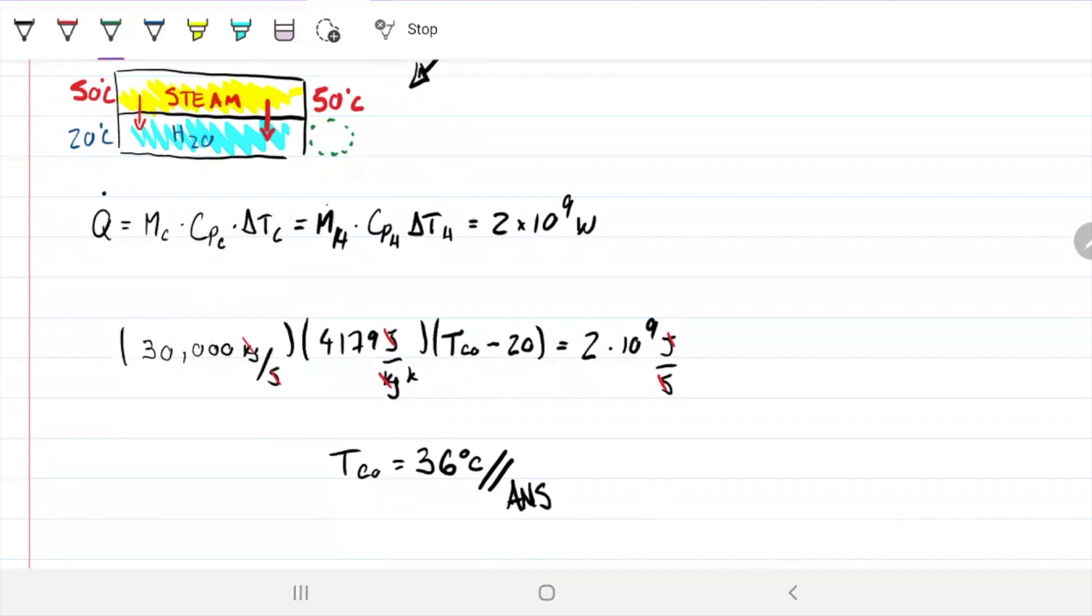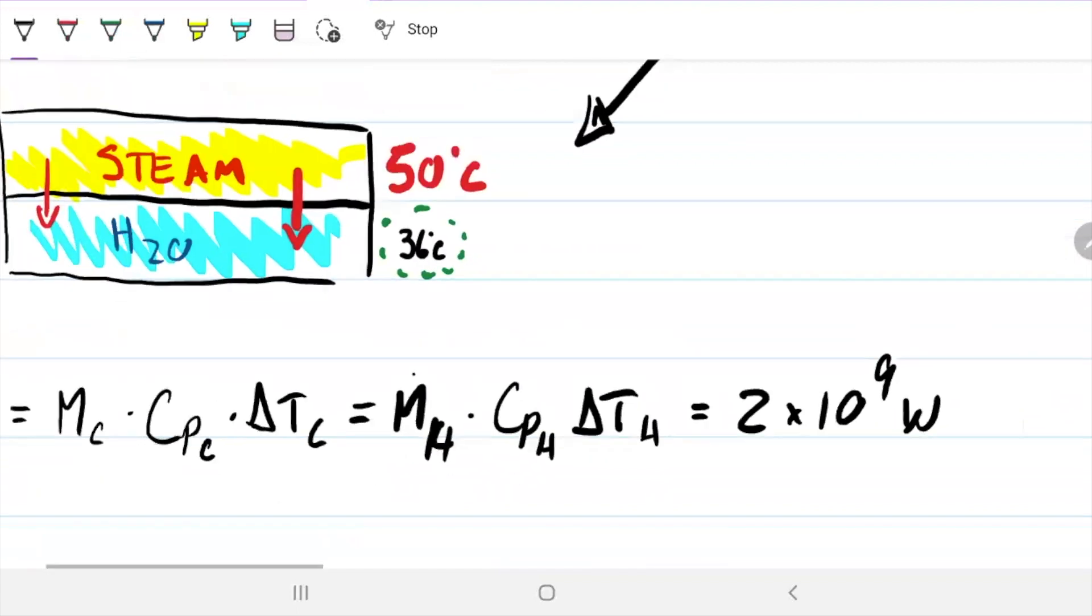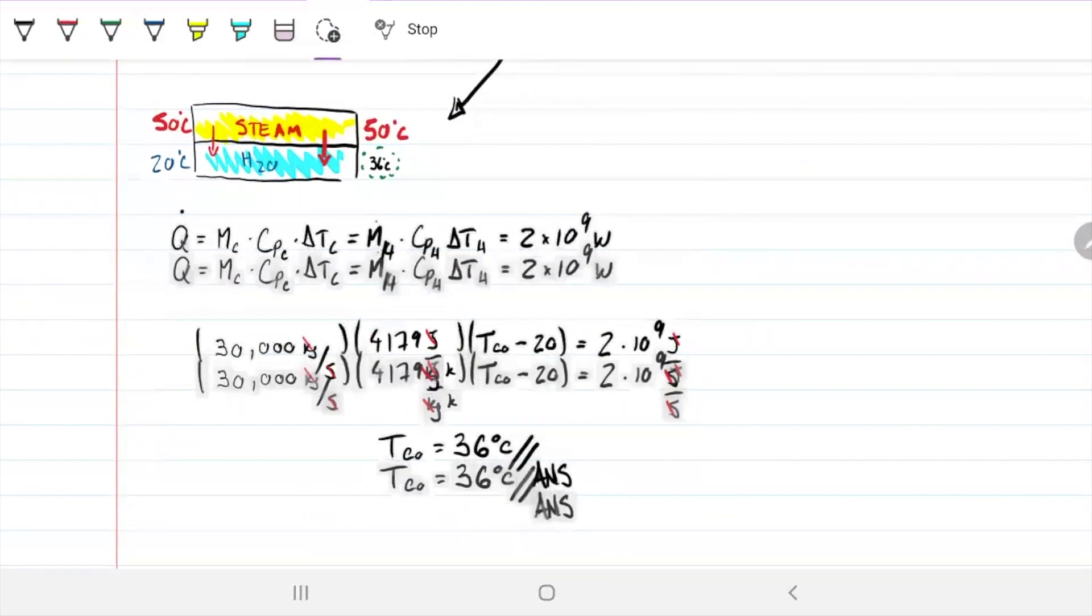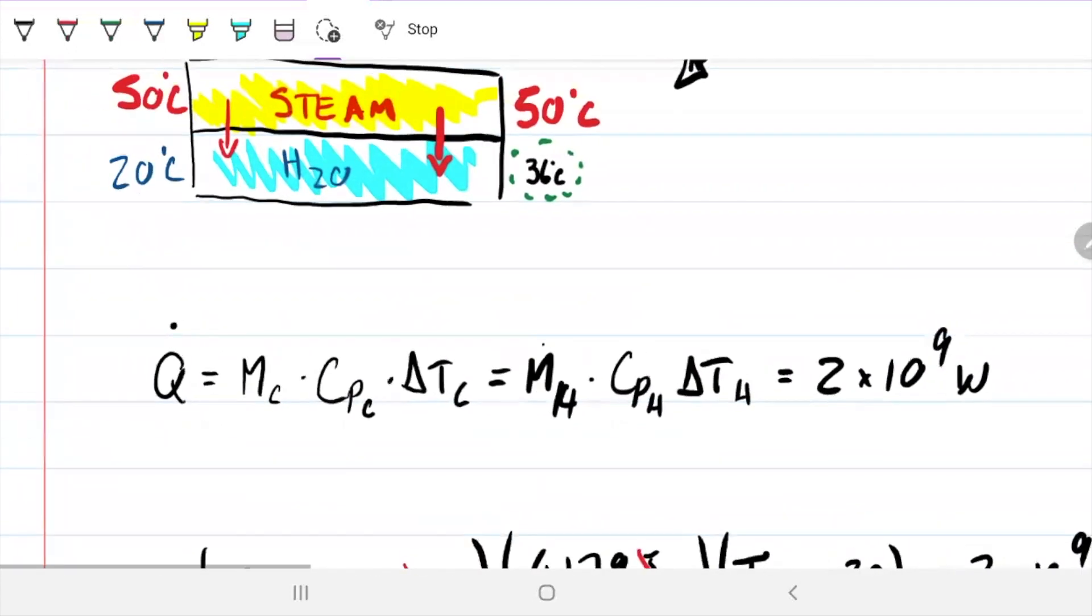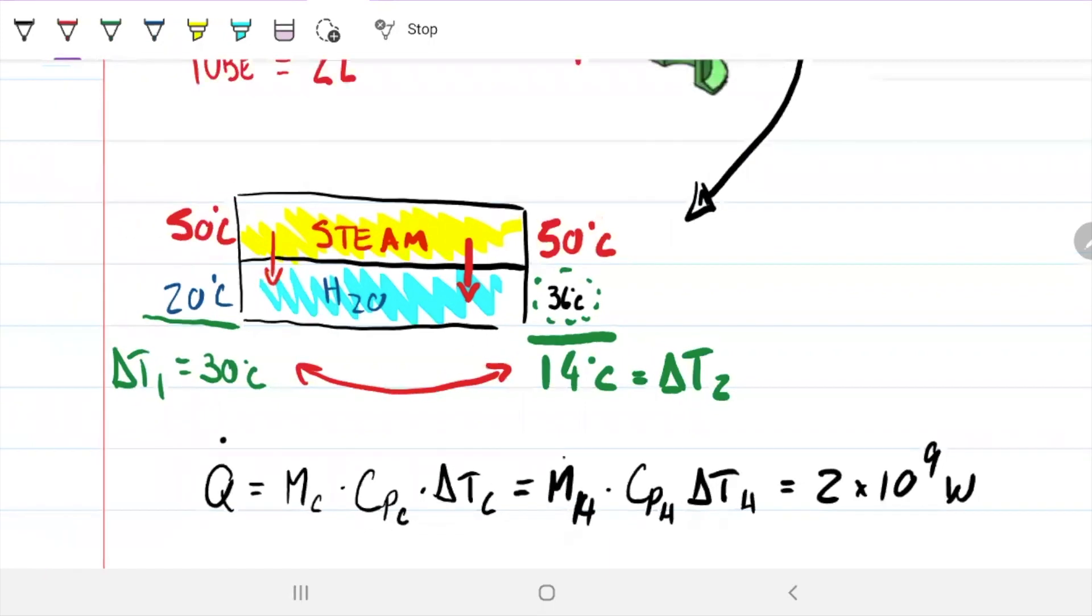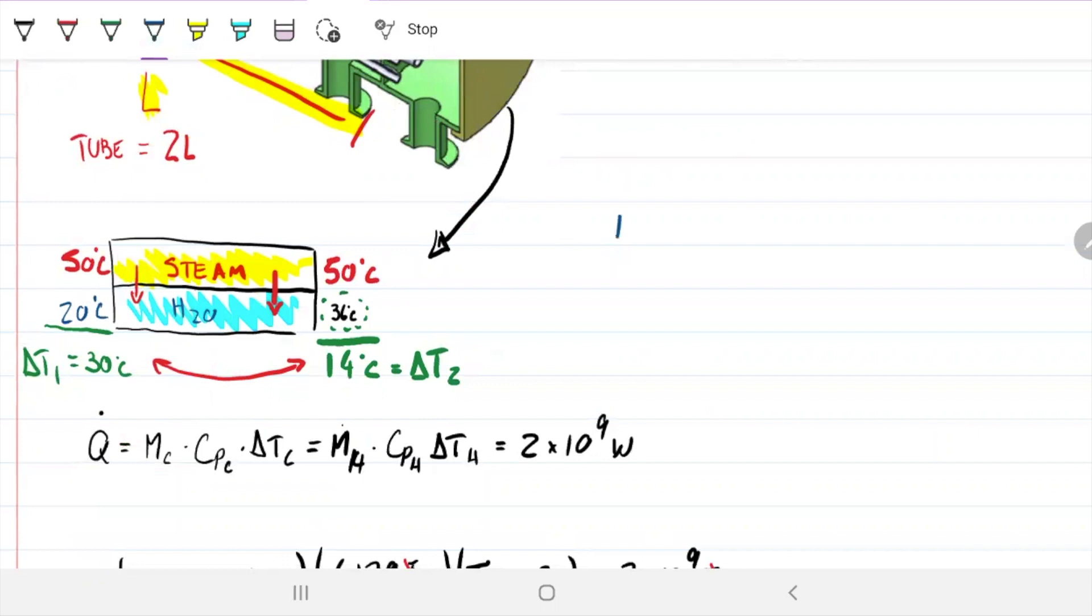This has to equal 2 times 10 to the 9th. This is joules per second. Note that joules and joules, seconds and seconds, kilograms and kilograms cancel, and we have Kelvin as the unit for temperature difference. So my temperature cold out will be 36°C, which is one of the answers we needed. Now I can come here and put this down as 36 Celsius. That's one of the parts of the problem. But now we can find our delta T log mean. We can do the difference over here, delta T1, that's 30. The difference over here is 14, and that's T2. When I do delta T log mean, I know it has to be somewhere in between these two numbers.